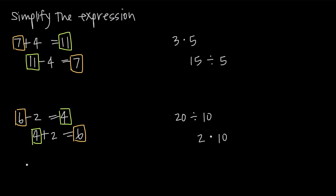Basically when you take a number out and add it back in, you're going to get back to the same thing. If we start with any number — let's just use a placeholder and call it x — and we add 4 and then subtract 4, plus 4 minus 4 is just 0. This gives us x plus 0. We know that 0 is the identity number for addition, which means adding 0 to anything doesn't change the value, so we still just end up with x.